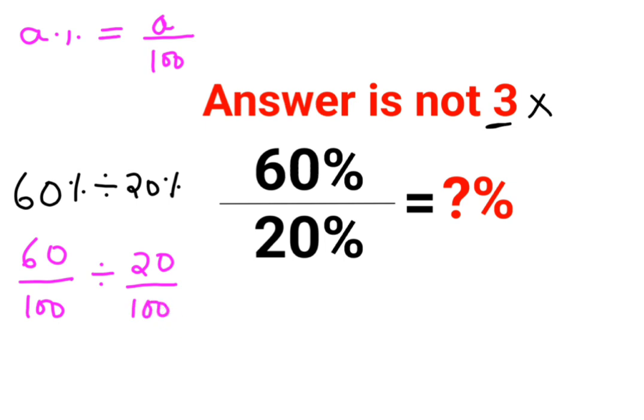Now remember, whenever we are doing division we always follow the rule of KCF, where K stands for keeping the first number as it is, means 60 upon 100 will be kept as it is. C stands for changing the division sign to multiplication, and F stands for flipping or taking reciprocal of 20 upon 100, which is 100 upon 20.